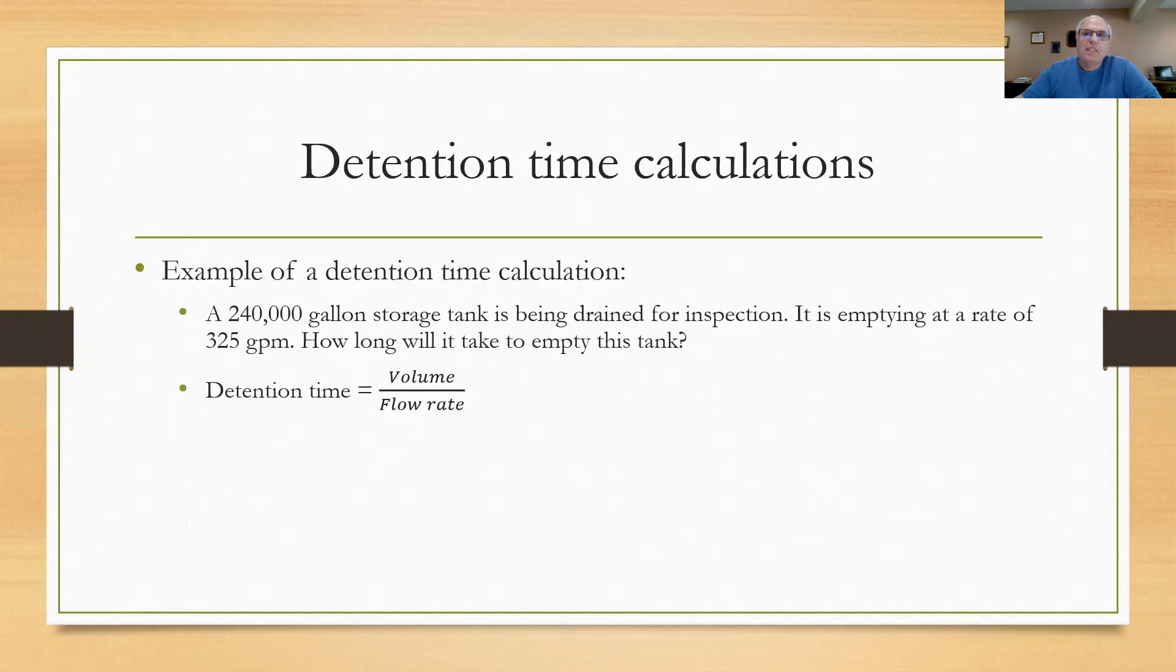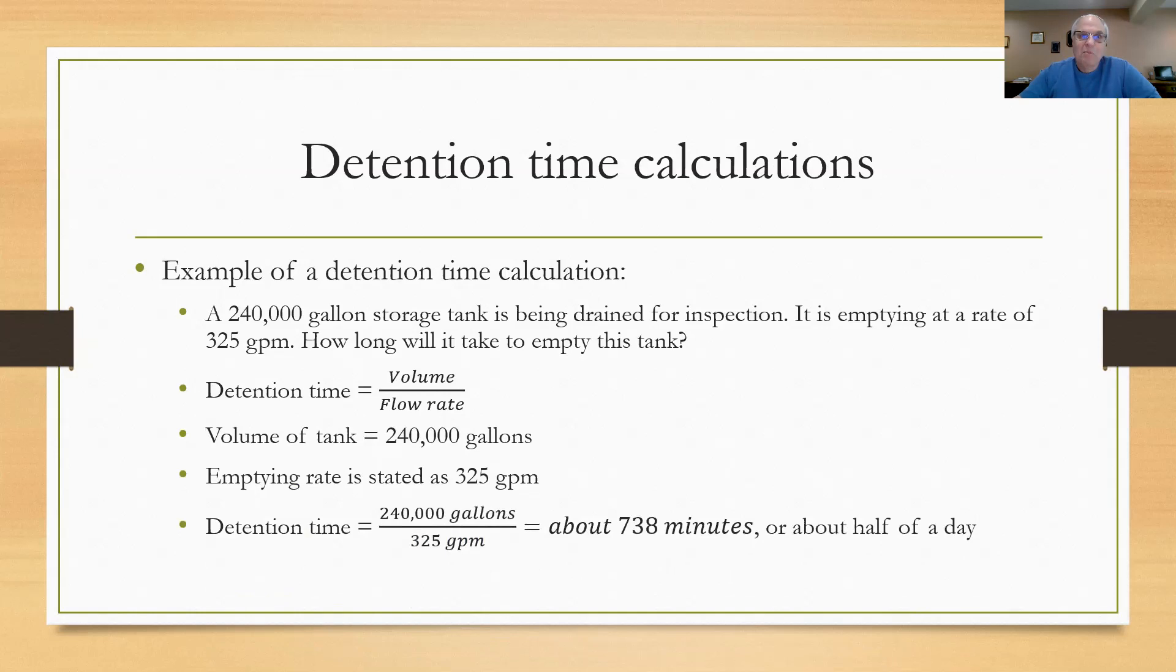So we use the detention time of volume divided by flow rate. Volume of the tank they gave us at 240,000 gallons. They told us that the flow rate coming out of it is emptying at a rate of 325 gallons per minute. If I set up my detention time problem and put 240,000 gallons in the formula divided by the 325 gallon per minute emptying rate, it comes out to about 738 minutes or about half a day. By the way, when I'm doing these calculations, you can always stop the video at that point, work them out on paper, and then start the video to see if you get the right answer.